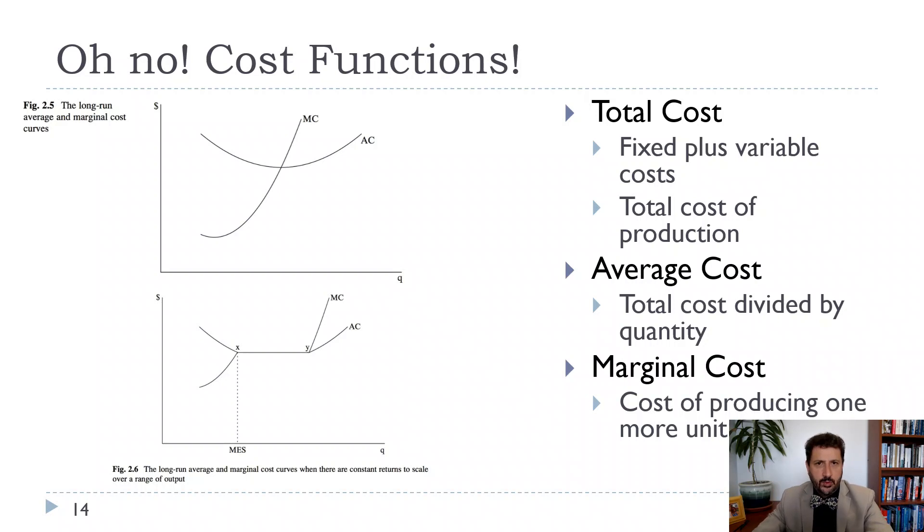Cost functions are not everybody's absolute favorite piece of economics for some strange reason. But they are really important. So if we're thinking about firms maximizing profit, they need to think about both revenue and costs. And as we'll see, what they're going to want to do is to set marginal revenue equal to marginal cost, or at least some close approximation of that.